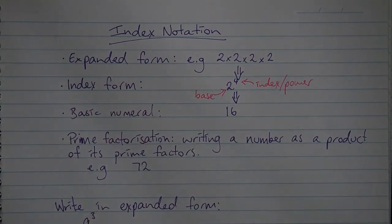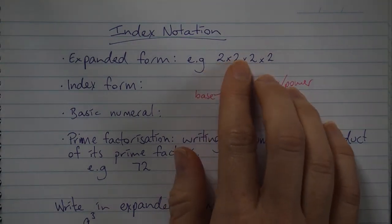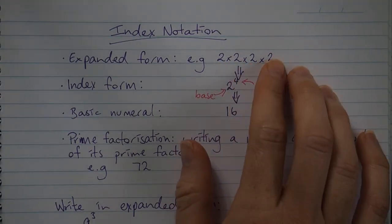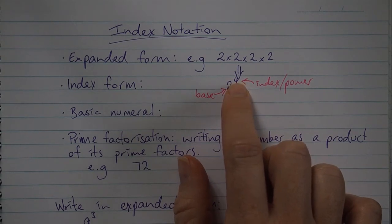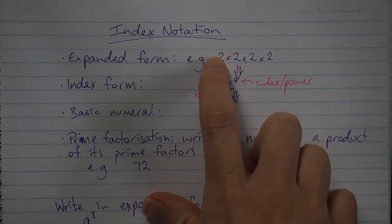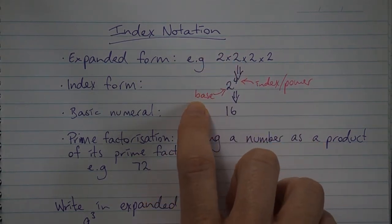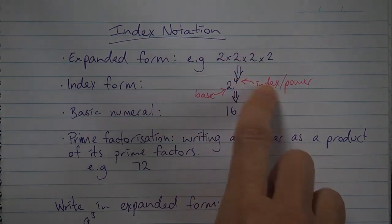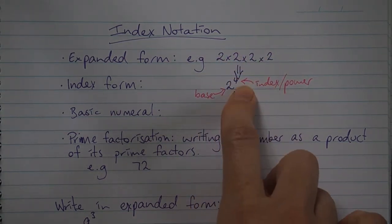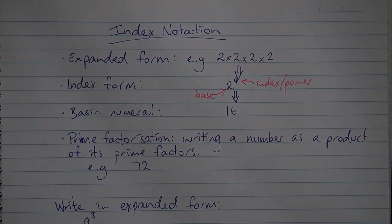Then we have index form. Index form is writing your number as a power. Taking the example of 2 times 2 times 2 times 2, in index form that looks like 2 to the power of 4, because the base is 2 — that's the big number we're talking about — and there are 4 of them, so 4 is our power.